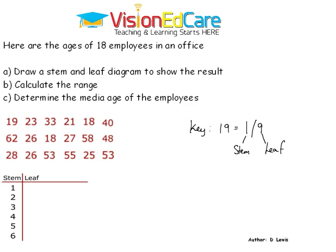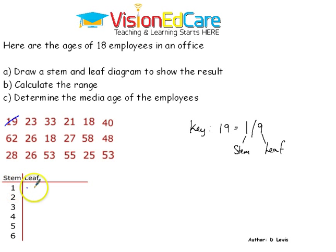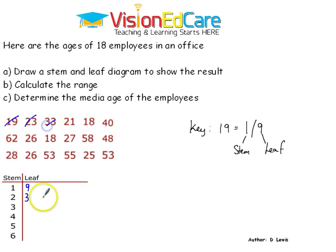Now let us complete our stem and leaf diagram, then we will reorder. We have 19: stem 1, leaf 9. We have 25, 23, 23, 23.